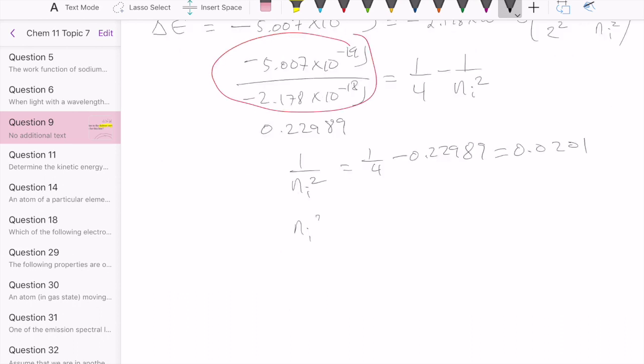Now if that's 1 over NI squared, NI squared would then be 49.73. Then to get NI, we just need to take the square root of this number, and that would give us 7.05. Remember, N has to be a whole number, so the closest whole number would be 7. And so that would be the initial orbit. So in this case, we have the electron falling from orbit number 7 to orbit number 2.